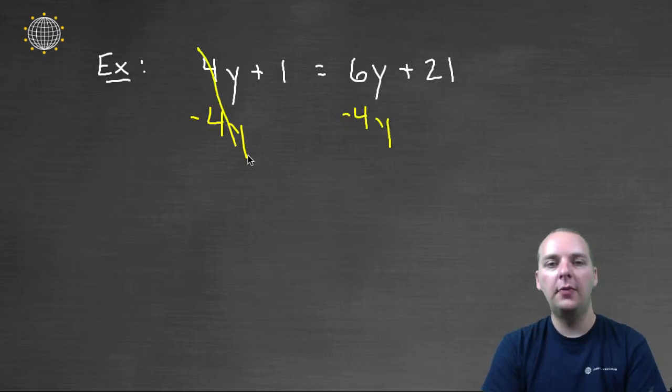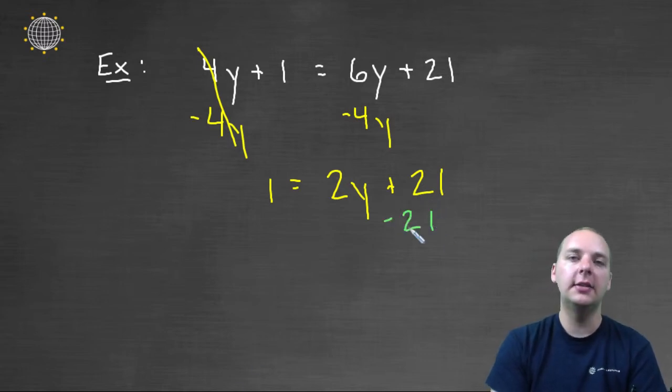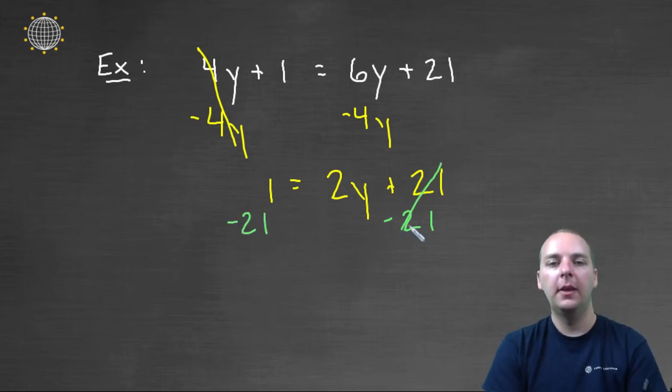So if we subtract 4y from both sides, then we would get 1 = 2y + 21. And do you see how moving it to the right hand side left this coefficient positive? That's preferable. Again, it's not necessary, but it's what we like to do. The next step would be to subtract 21 from both sides. The reason we'll do that is to move the constants to the left, being that the variables are on the right. So we'll cancel those, and we'll get -20 = 2y.